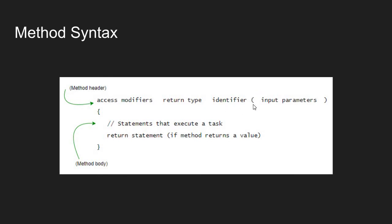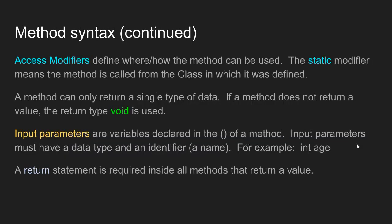After the identifier, we have a pair of parentheses, and inside these parentheses come input parameters. Input parameters are variables that are declared and ready to hold values passed from the outside world. They must have a data type and an identifier, just like a variable — for example, int age. We will look at how input parameters are used in a little bit.